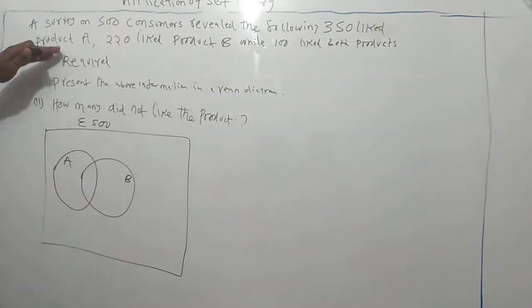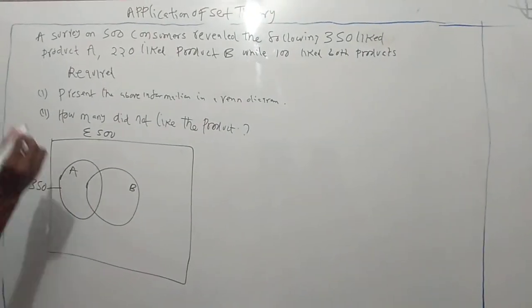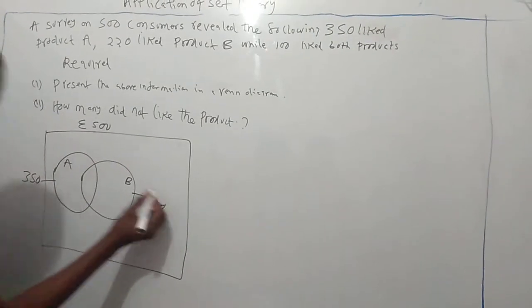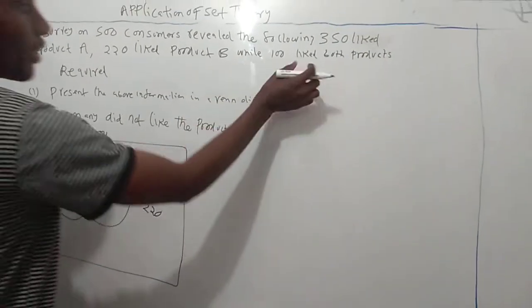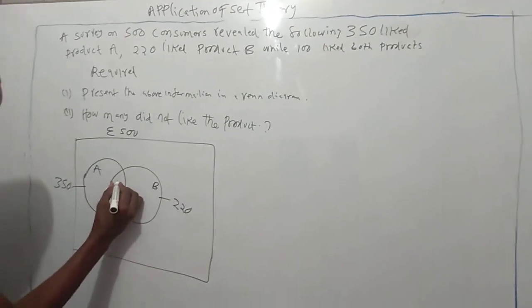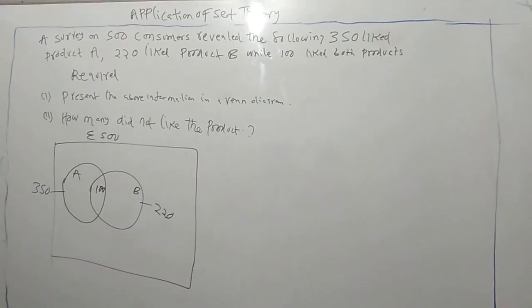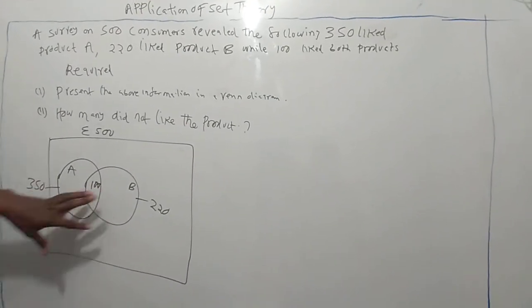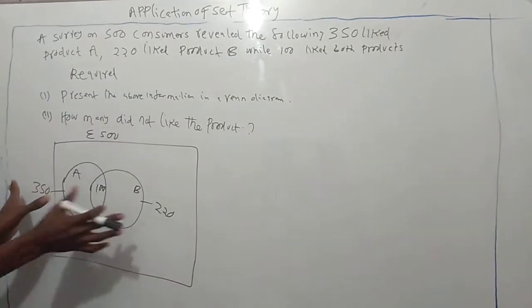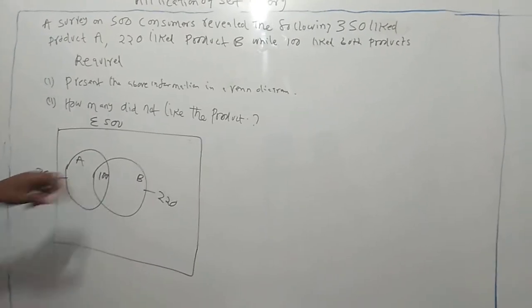We are told 350 like product A. 350 is product A. 220 like product B. That means 100 like both. That means both A and B, 100 like both. That is the solution to part A, where we are asked to present the information in a Venn diagram. We have the one for A, B, and the one for common. This is normally common.